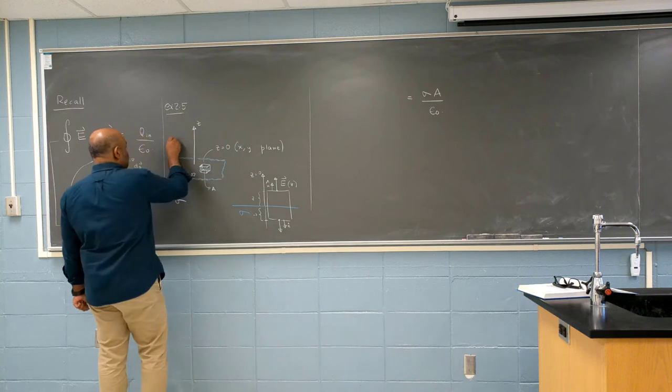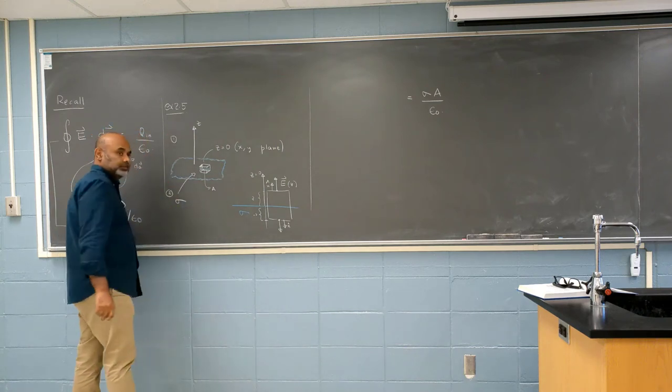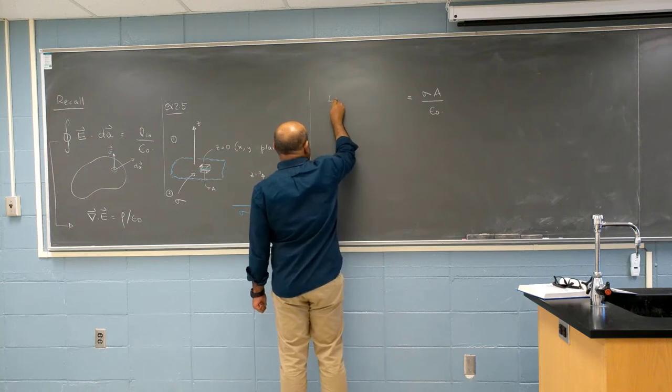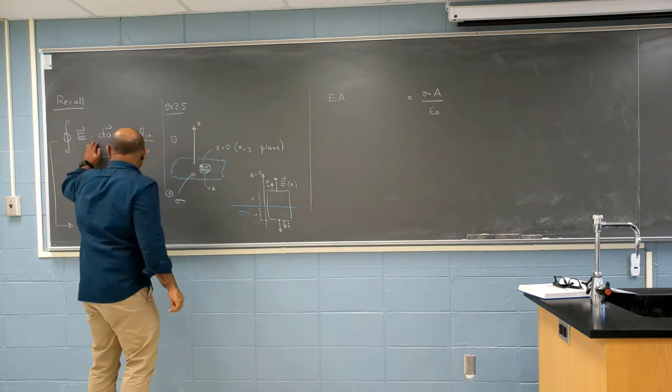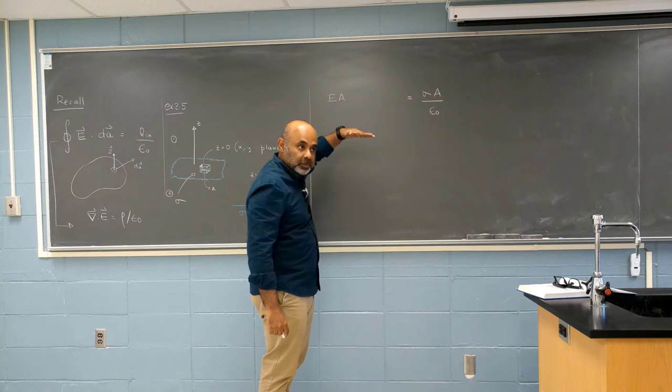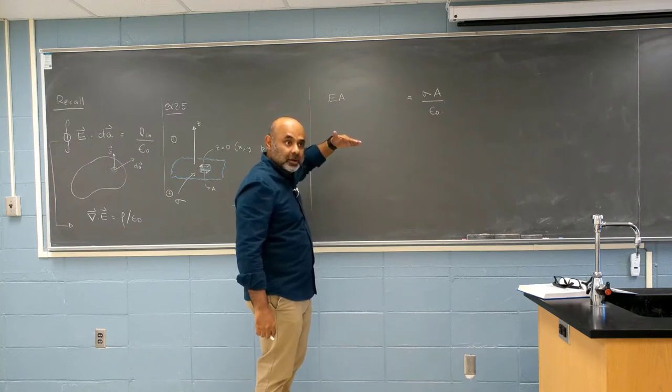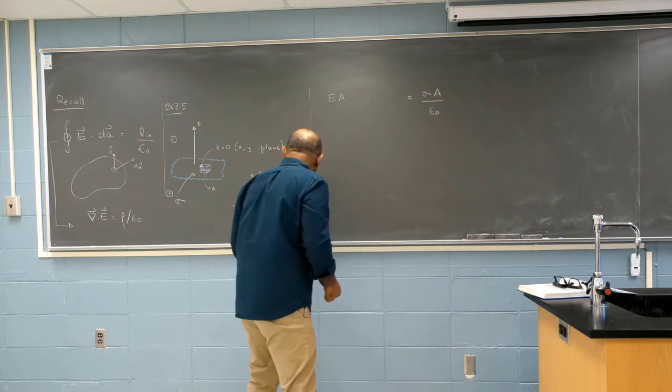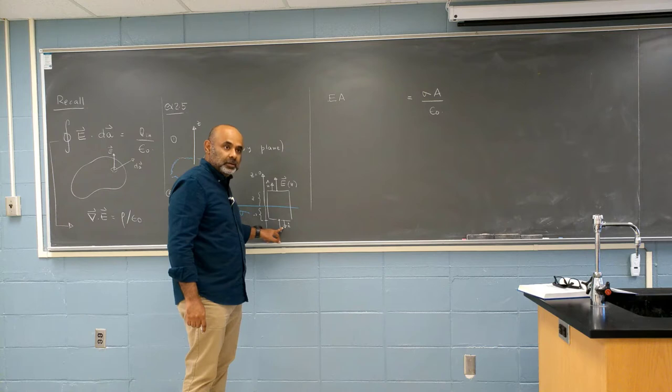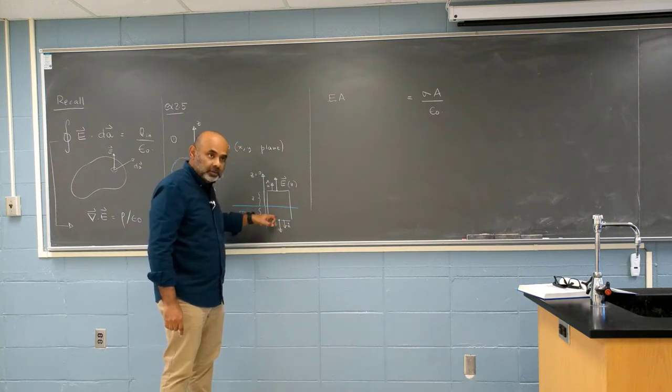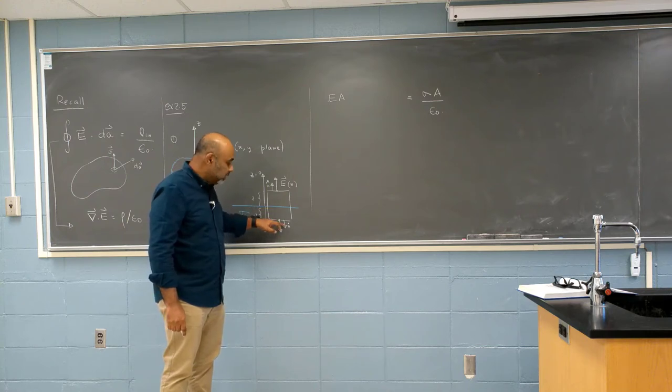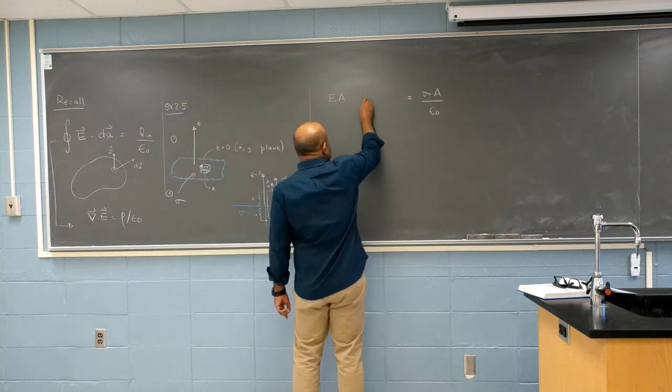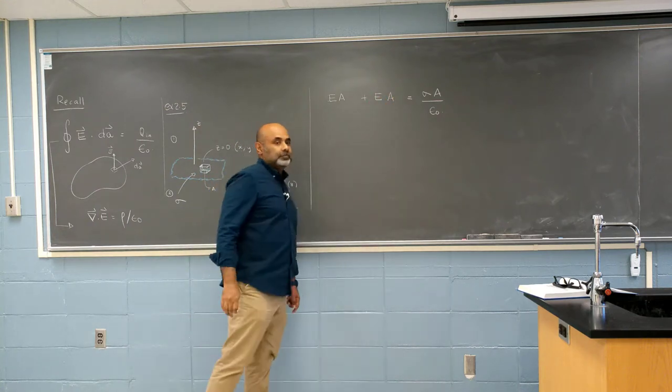I am going to call this region 1, this region 2. From region 1, I get E. The integral is just E times A. E is a constant. The magnitude is a constant. I pull it out of the integral. What is the integral of dA? Just A. What contribution do I get from this side? I am taking the dot product. E is pointing down. The normal vector is pointing down. Once again, when I take the dot product, I get 1 times the magnitude. And we know the magnitude is the same. So I get...Melissa, are we good?